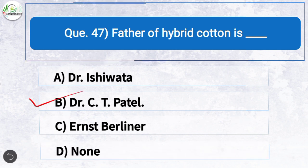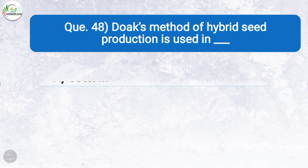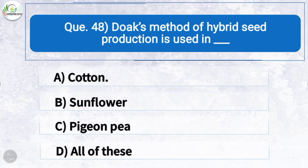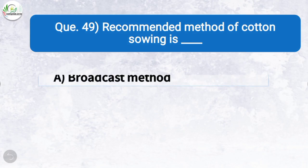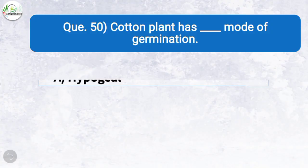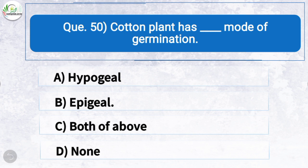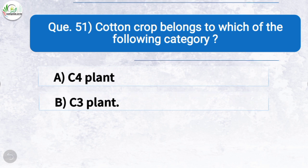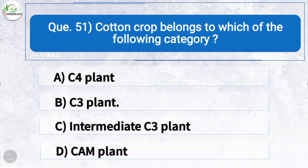Question forty-seven: Father of hybrid cotton is — the correct answer is option B: Dr. C.T. Patel. Question forty-eight: Dog's method of hybrid seed production is used in — the correct answer is option A: cotton. Question forty-nine: Recommended method of cotton sowing is — the correct answer is option B: drill method. Question fifty: Cotton plant has — the correct answer is option B: epigeal mode of germination. Question fifty-one: Cotton crop belongs to which category? The correct answer is option B: C3 plant.